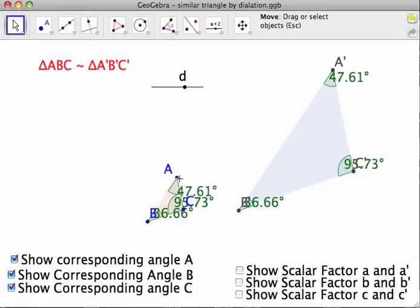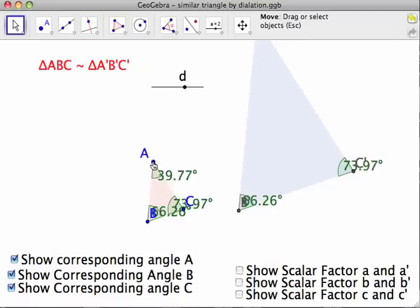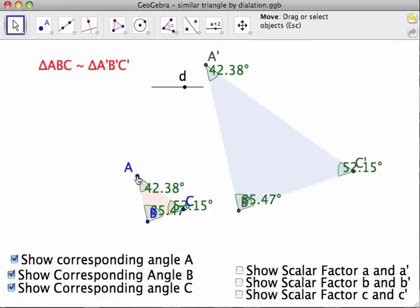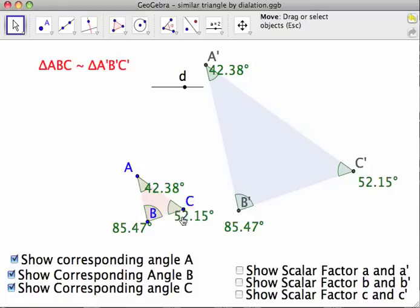But if you move A and change the angle a little bit, the corresponding angles match up. Kind of tough to see. 85.47, 85.47, 52.15, 52.15. So the corresponding angles are equal.